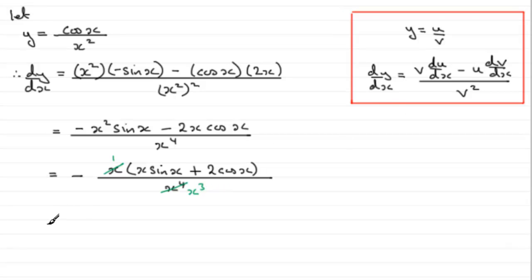So we finally end up with the fraction minus x sine x, we don't need any brackets anymore, plus 2 cos x, all over x cubed.